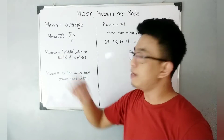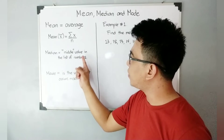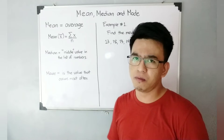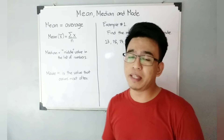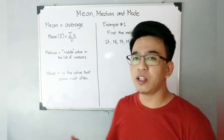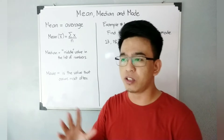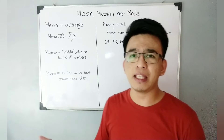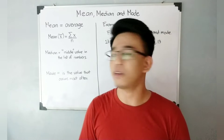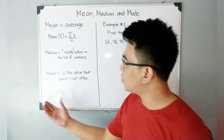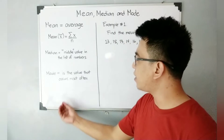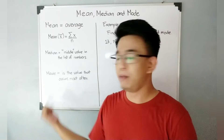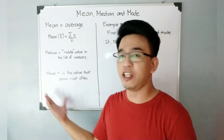Next is the median. Median is the middle value in the list of numbers. Before you calculate for the median, or before you try to get the middle value, you first need to arrange the numbers in ascending or descending order. Most of the time, they use ascending order. And for the mode, mode is the value that occurs most often. We'll see why that definition applies later on.